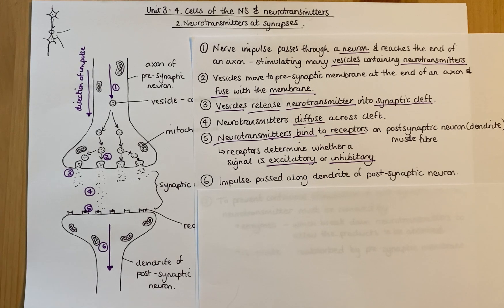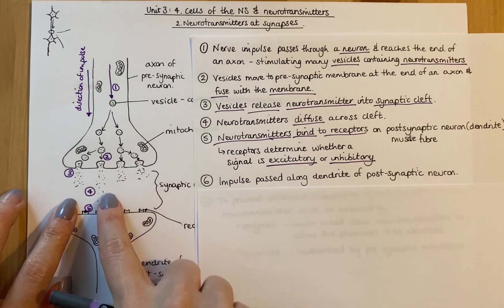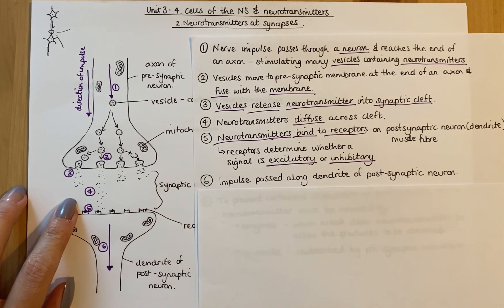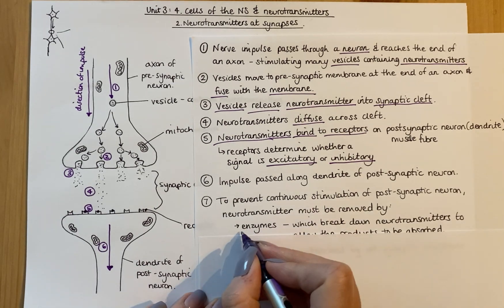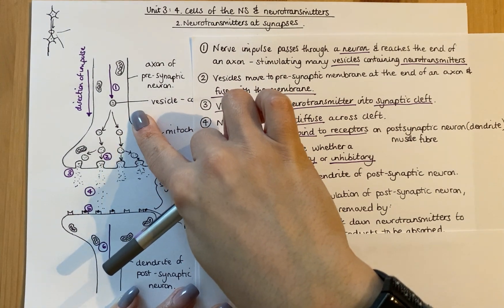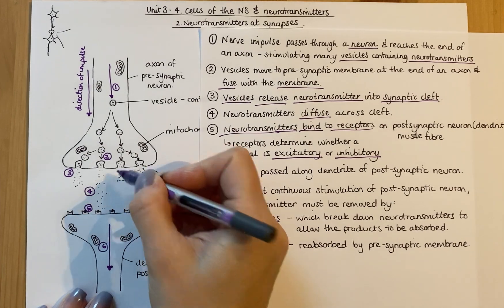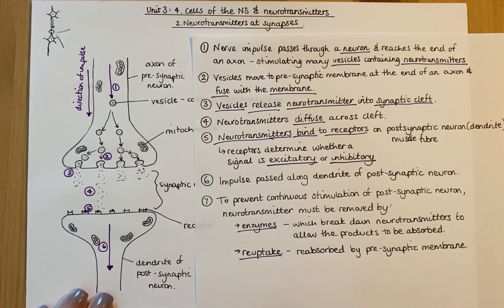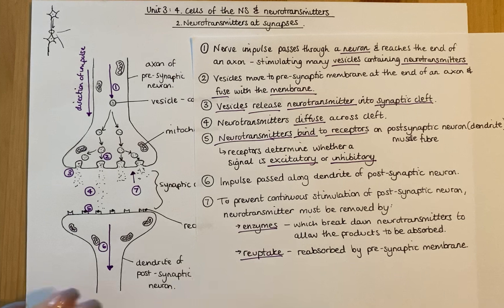Your body has to be quite efficient. To prevent continuous stimulation — to prevent that neuron from constantly being told to have an impulse — you need to remove the neurotransmitter. There are a couple of ways to do that. You can remove it by enzymes, which break the neurotransmitter down and allow the products to be reabsorbed back into the cell to make more neurotransmitters. Or it can be taken back in by reuptake — basically reabsorbed back into the pre-synaptic neuron. Step seven is that neurotransmitter being broken down and taken back in.